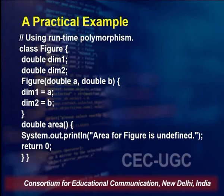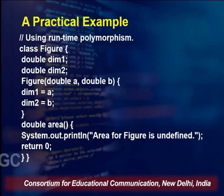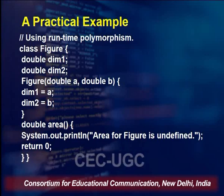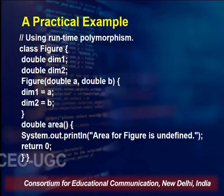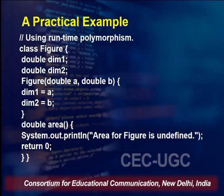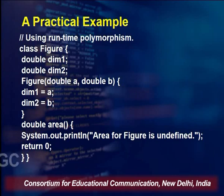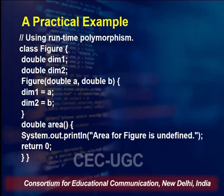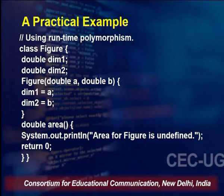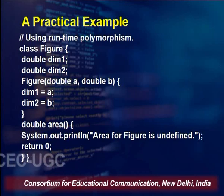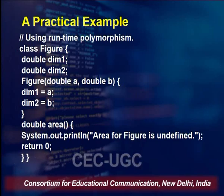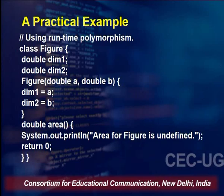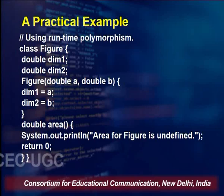For example, if it is a triangle the formula is different; if it is a rectangle the formula is different. With every figure the area will have different calculations. So the function area is just returning a double value and printing that the area for the figure is undefined, returning 0 because one return value must be present. Class Figure has two instance variables dim1 and dim2, one constructor, and one function area whose implementation is not specifically defined.